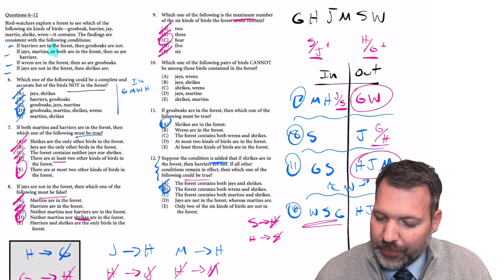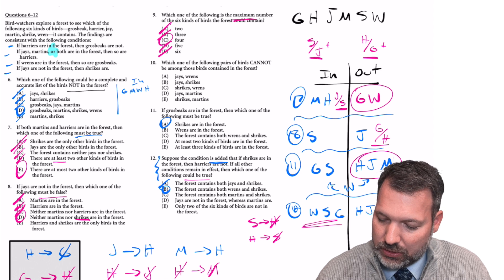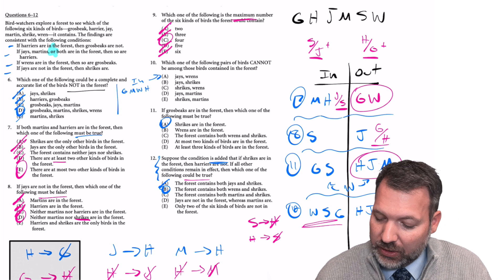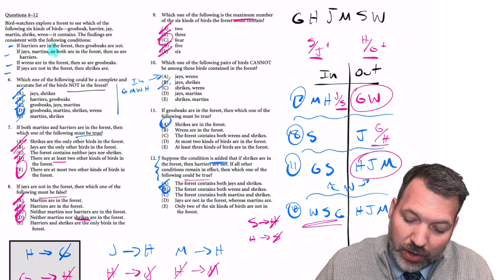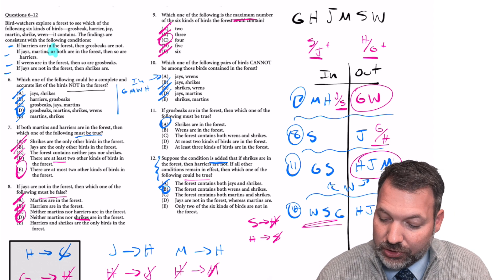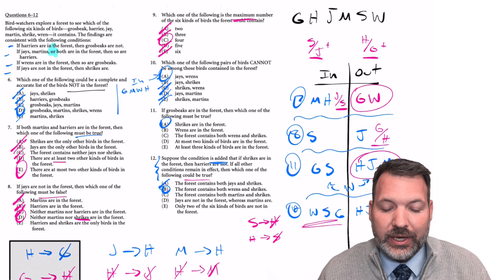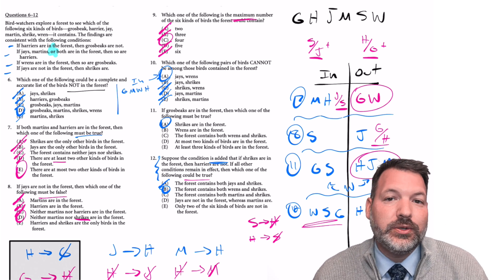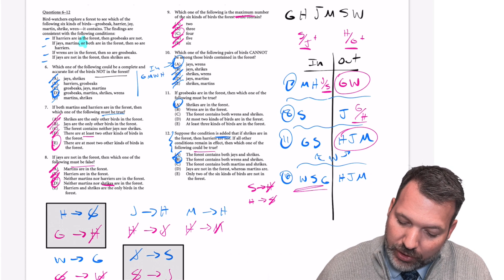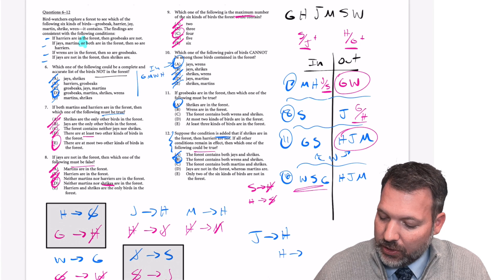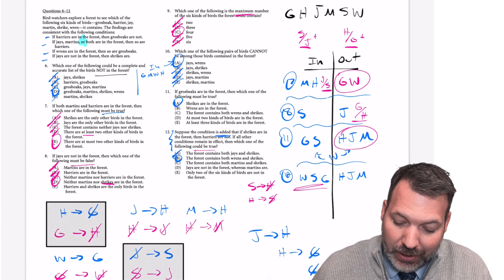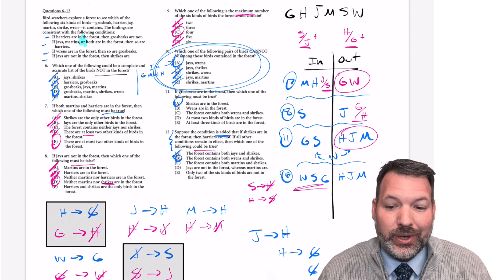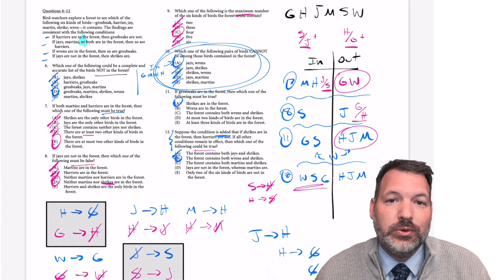Number 10: which one of the following pairs of birds cannot both be in the forest? Answer B, Jays and Shrikes — we've seen that possibility on number 7, cross off B. Answer C, Shrikes and Wrens — we saw that on number 12, cross off C. Answer D, Jays and Martins — we saw that on number 7, cross off D. Answer E, Shrikes and Martins — we saw that on number 7, cross off E. By elimination, number 10 is A, Jays and Wrens. This also illustrates why we don't need domino-train deductions — checking previous scenarios is more efficient.